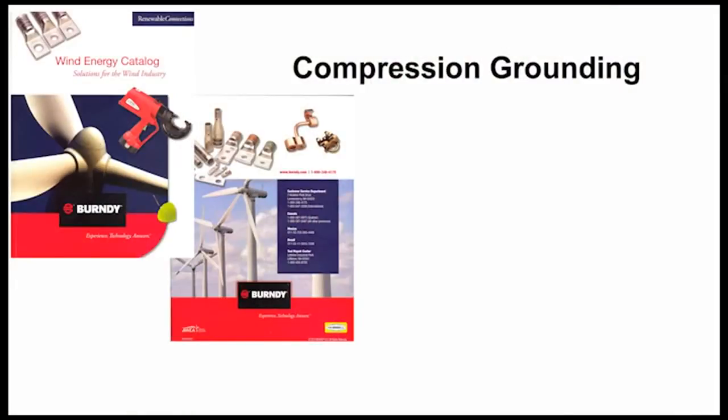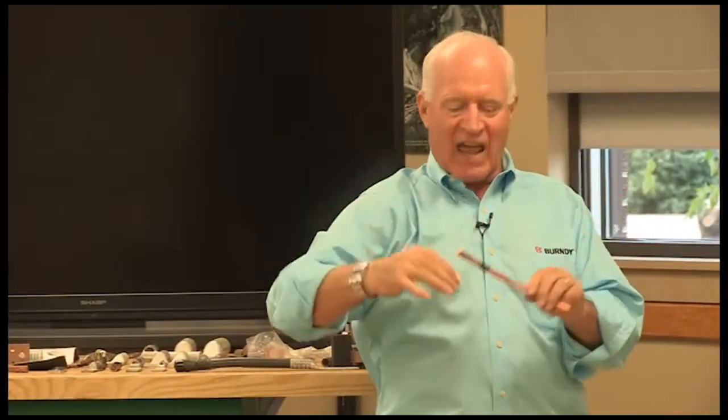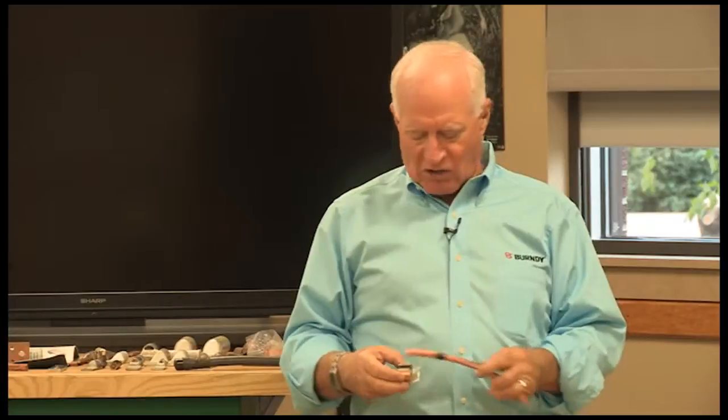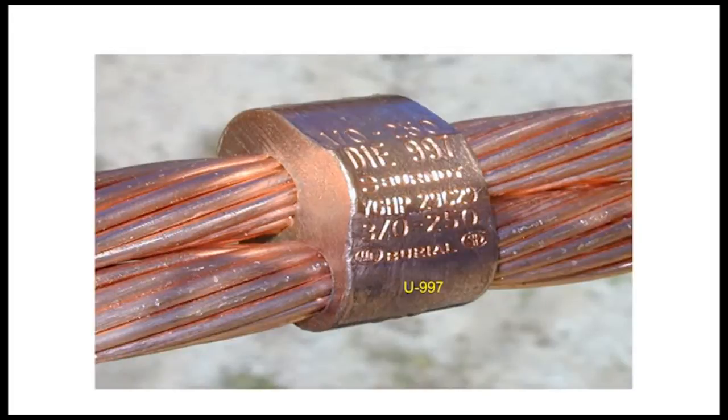Compression grounding. We're taking the copper cable and a copper connector. This copper and this connector the exact same materials. Under a certain amount of force when I put it into the crimping tool and I apply the 12 tons of force to encircle this connector onto this cable. Two like properties under a certain amount of force blend together to become one.